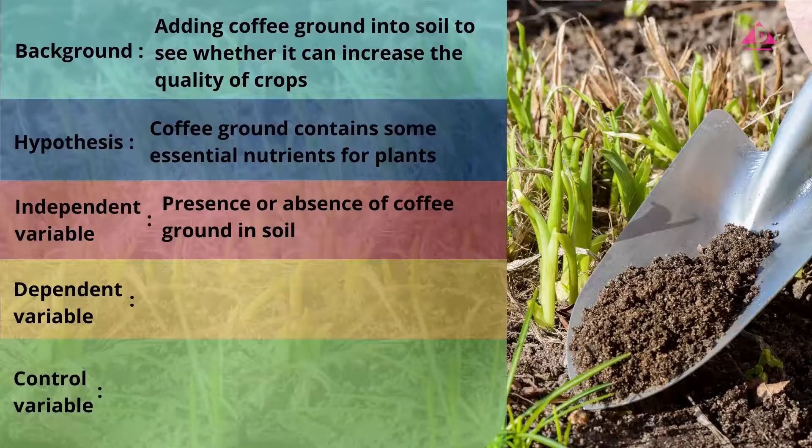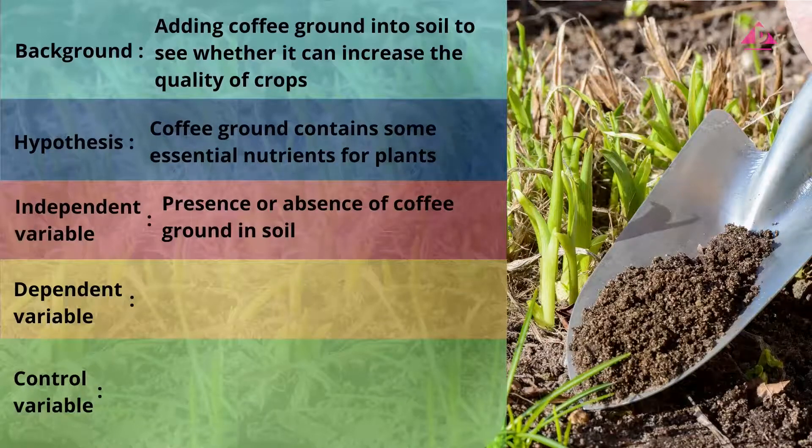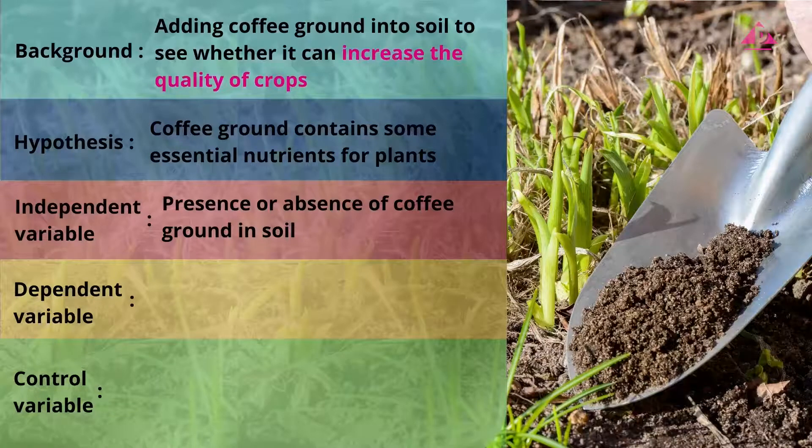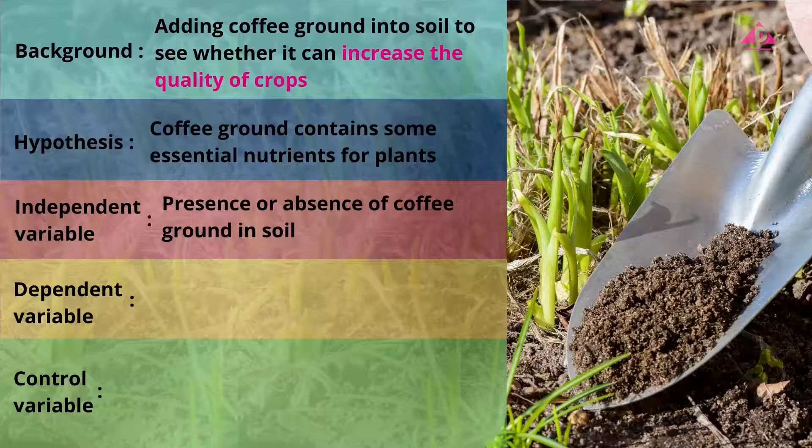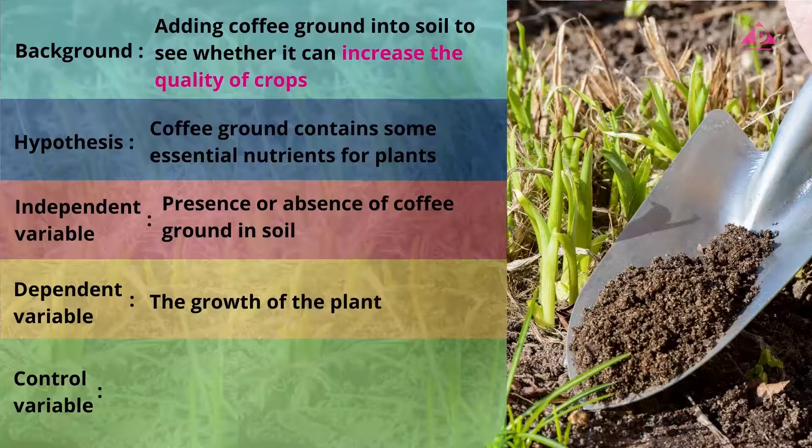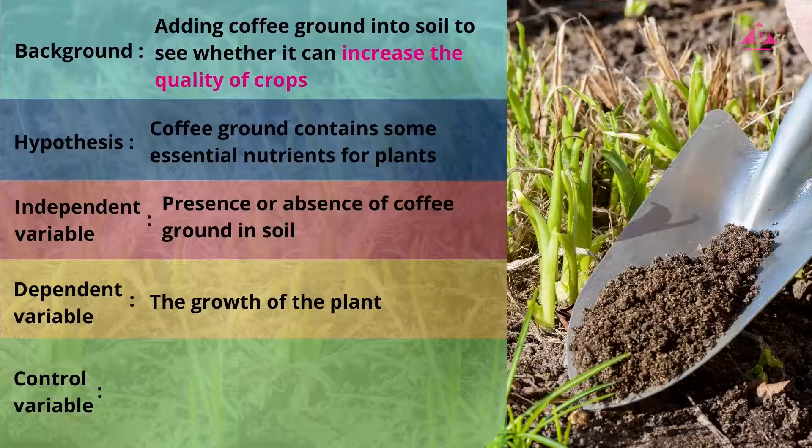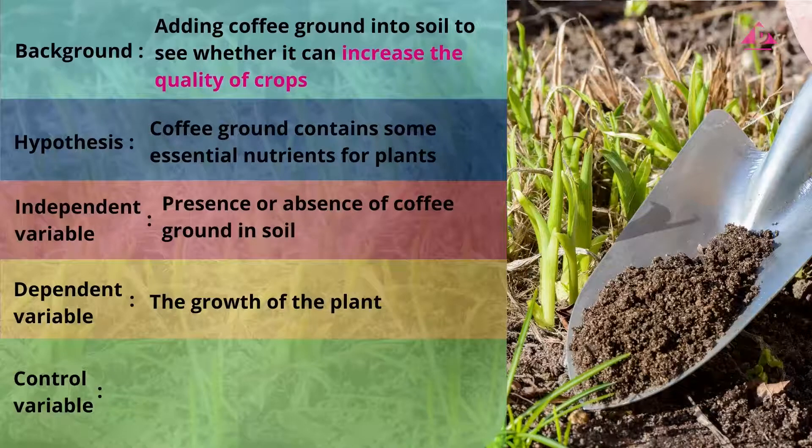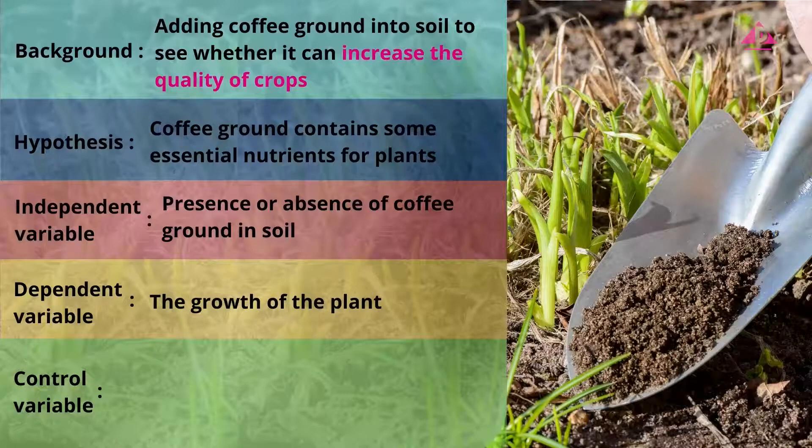But how can we prove whether or not coffee ground contains nutrients for plants? Andy's aim is to improve the quality of crops. If his hypothesis is correct, the growth of the plants will change along with the independent variable. So, the growth of plants is the dependent variable being measured. We can measure plant growth by observing the changes in the number of leaf, leaf area, or the height of the plants, depending on the type of plant we choose.